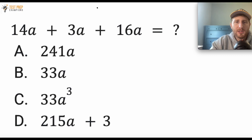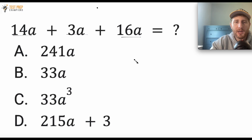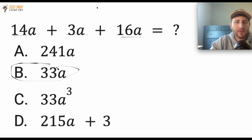So for a question like this, we see that each term has an a in it. What we have to do is just add up the numbers and bring the a along for the ride. So we're going to do 14 plus 3 plus 16 and keep the a. The correct answer here is B, 33a.